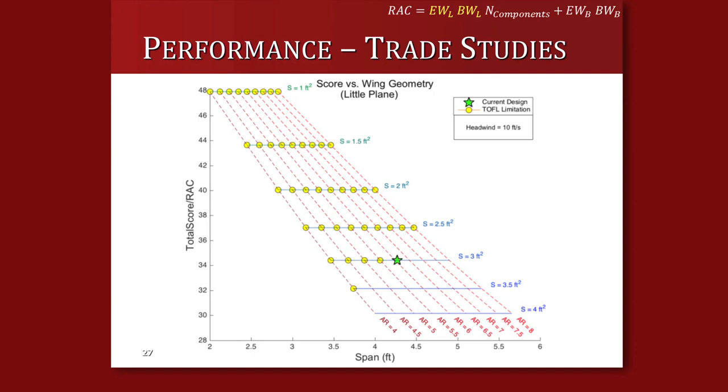We simulate each geometry through the whole competition and check it against restrictions. The yellow dots are wing geometries that don't meet the takeoff limitation. The highest-scoring configuration that can complete all missions subject to the requirements is the one we choose. From there, the propulsion captain takes that wing geometry with a clearer idea of the performance requirements.